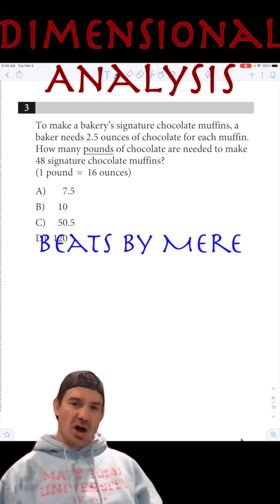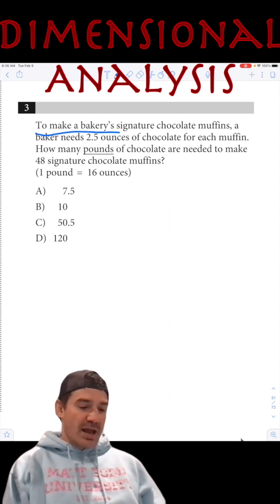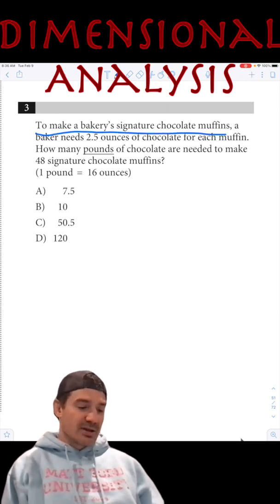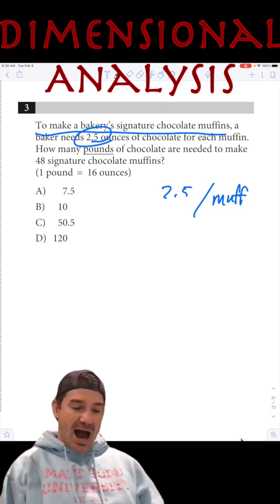I love a good chocolate muffin, make it gluten-free. Check it out. So the bakery's signature chocolate muffins use 2.5 ounces of chocolate for each muffin. So 2.5 per muffin. How many pounds of chocolate do we need for 48 signature chocolate muffins?